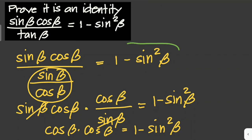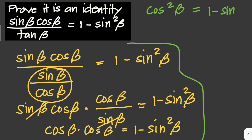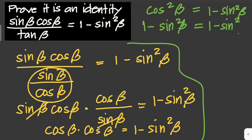Simplifying further, cos(β)·cos(β) is cos²(β), which equals 1 − sin²(β). By the Pythagorean identity, cos²(β) = 1 − sin²(β), which matches the right-hand side exactly. Therefore, this equation is an identity.